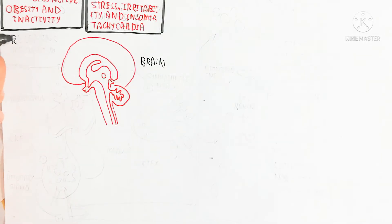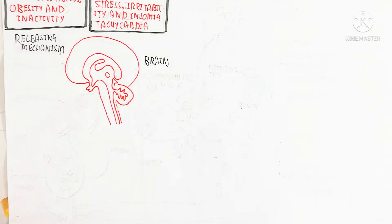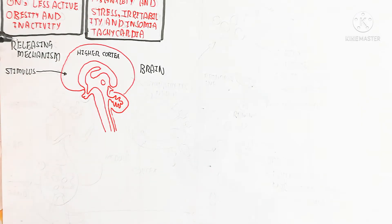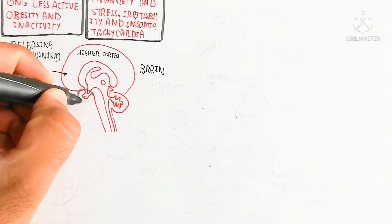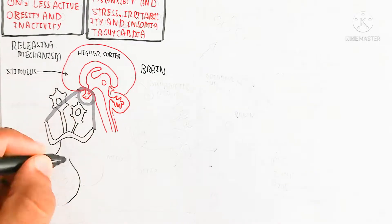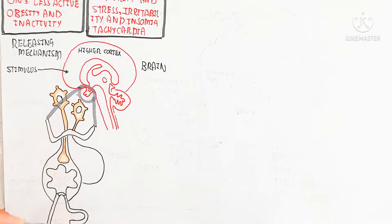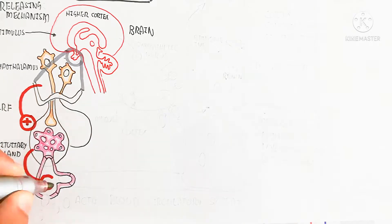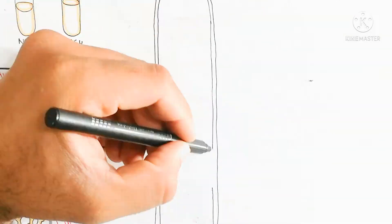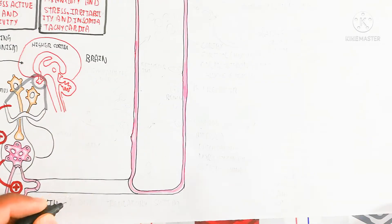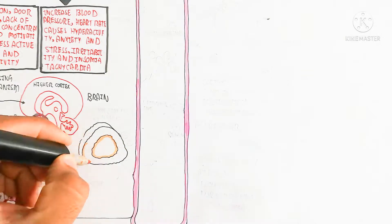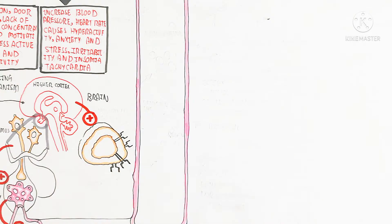Here I am drawing the brain, which contains the higher brain cortex. After stimulation from fear, alertness, or learning in a classroom, the sympathetic nervous system will be activated for more alertness. The stimulus stimulates the higher brain cortex, which sends a signal to the hypothalamus. The hypothalamus, which contains the pituitary gland, stimulates the adenohypophysis via the corticotropic releasing factor. This corticotropic releasing factor stimulates the pituitary gland to release adrenocorticotropic hormone (ACTH) into the blood circulatory system.